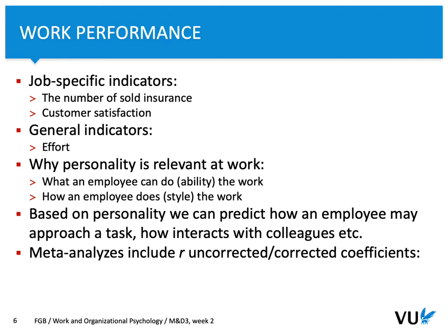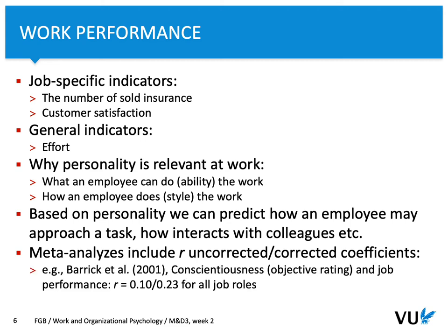As you probably remember from the textbook, the relationship between personality and job performance has been studied quite extensively. A number of meta-analyses took into account different aspects of job performance. In those meta-analyses, you can find two types of coefficients: uncorrected and corrected. In a meta-analysis by Beric and colleagues, there was a positive relationship between conscientiousness and job performance. The uncorrected value was 0.10 and the corrected value was 0.23. The uncorrected value reflects a small effect size, while 0.23 is close to a medium effect size.